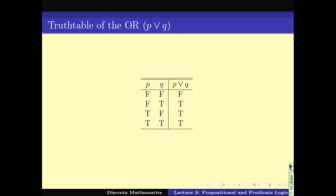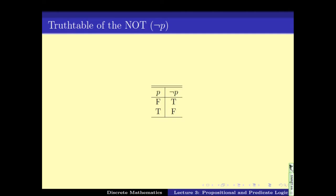Similarly for OR: if I say I will give you an A grade or a B grade, as long as I do either of those, the whole sentence is true. So as long as one of p and q is true, I get true. Whereas if both of them are false, the function evaluates to false. For the connective NOT, it just flips the value — a false statement becomes true and a true statement becomes false.